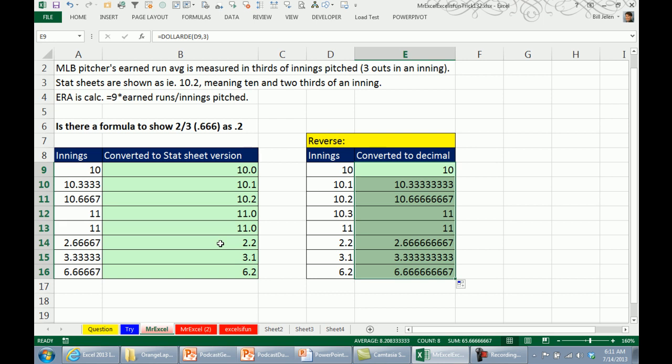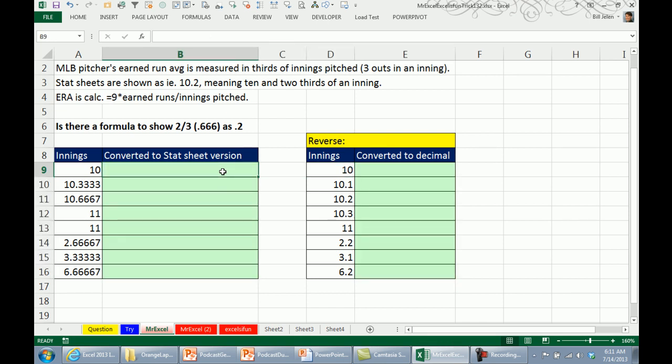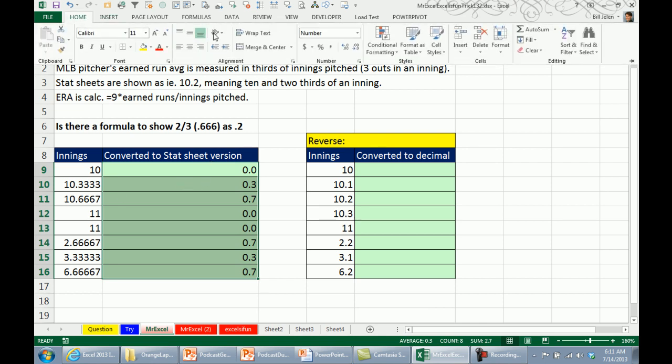So all the Moneyball, the people who are really doing that Moneyball statistics, they have a solution here. Now let's assume that we didn't have those functions, a different way to go is equal MOD of this number comma 1. That gives us just the decimal portion. So it cuts off the integer and gives us just the decimal and let's show a few more decimal places here.